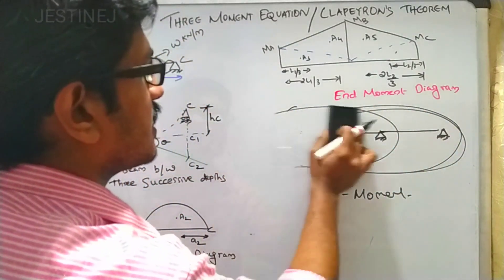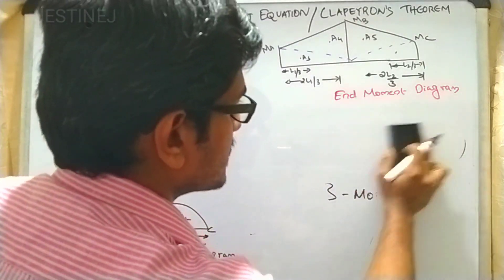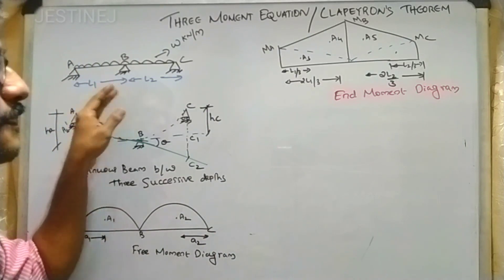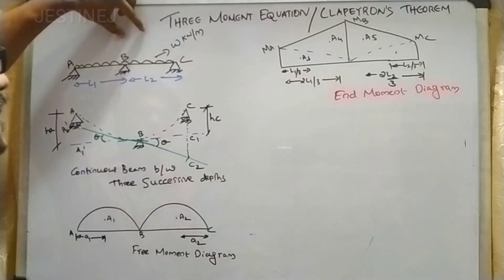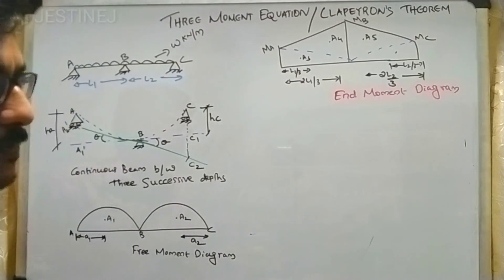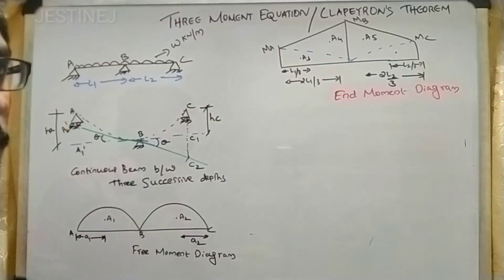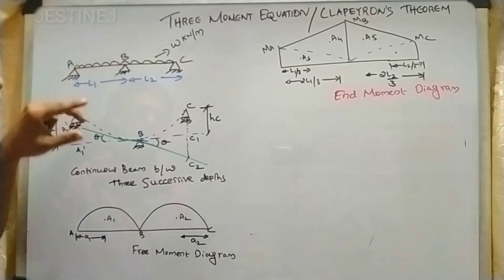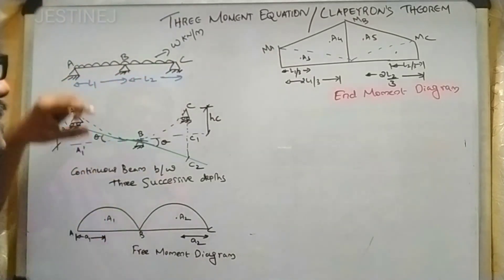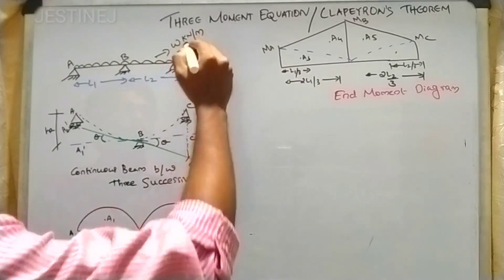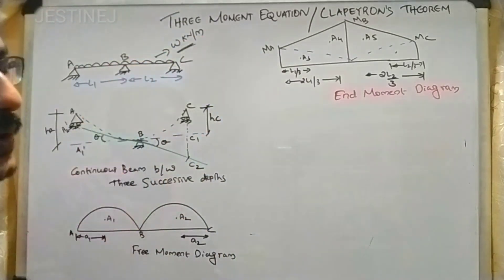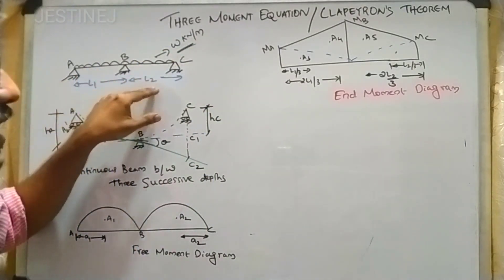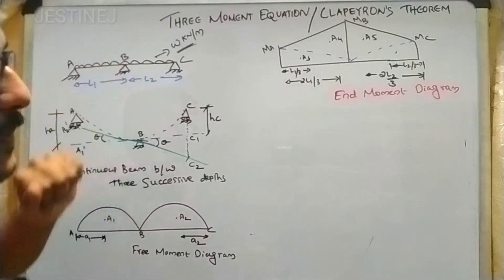The three moment equation can only be used for a continuous beam. Now coming to the derivation part: we consider a continuous beam with a UDL acting on it. Let us assume the magnitude is w kN per meter and the span lengths are L1 and L2 for spans AB and BC respectively.